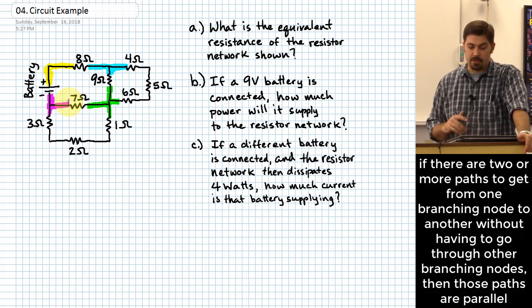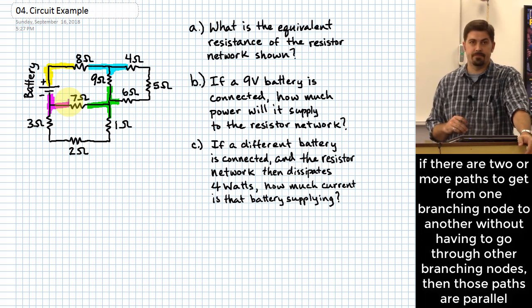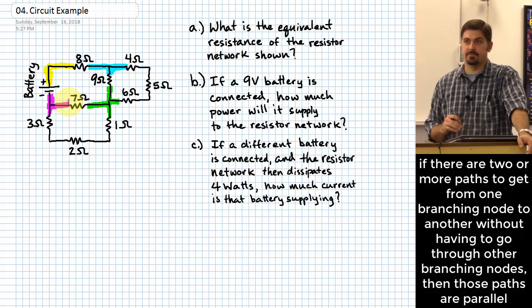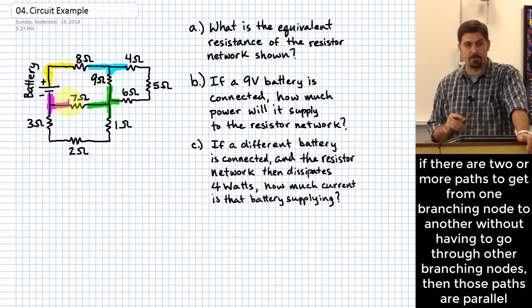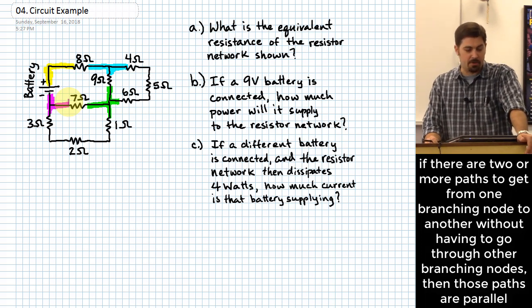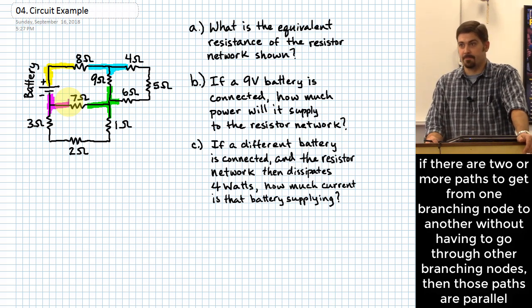Now, if you can identify maybe two different paths to get from one node to another, then those two paths are parallel. So if you're on the blue node up there and you want to get to the green node, what ways can you go? You can go down through the nine ohm resistor, or you can go around through the four, through the five, through the six. Those are the two ways if you're a little electron that wants to go from one of those nodes to another node.